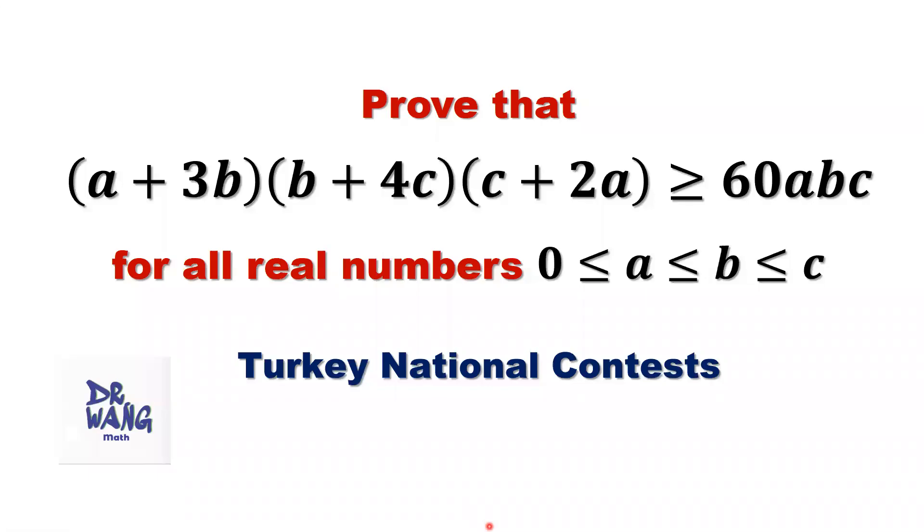Hello everyone, I'm Dr. N. Here is the question. Prove that (a + 3b)(b + 4c)(c + 2a) is greater than or equal to 60abc for all real numbers where 0 ≤ a ≤ b ≤ c.